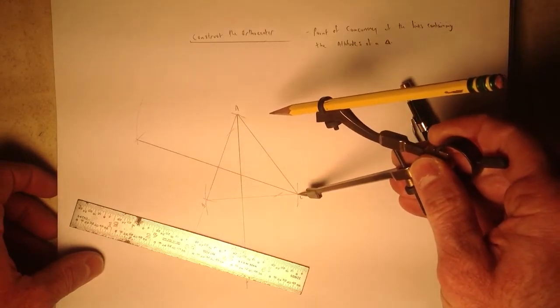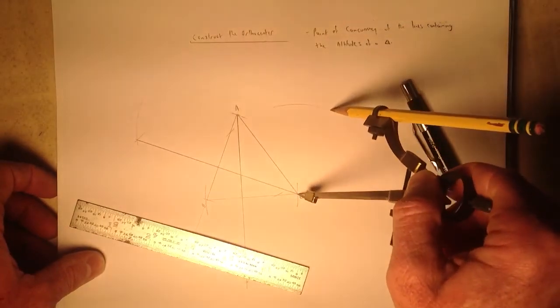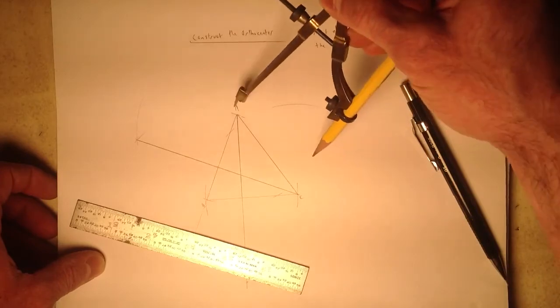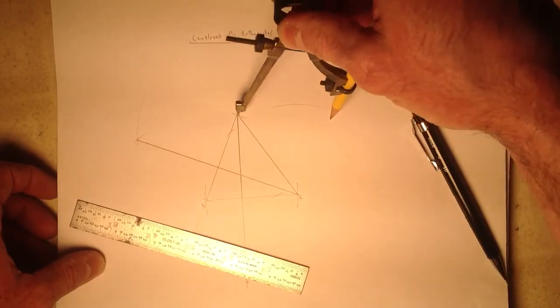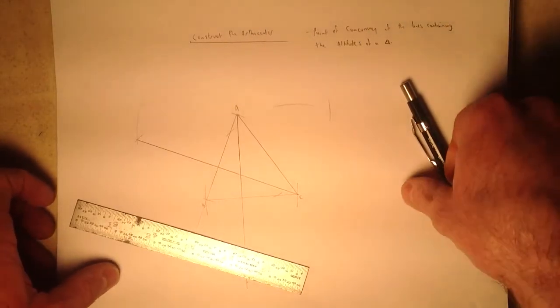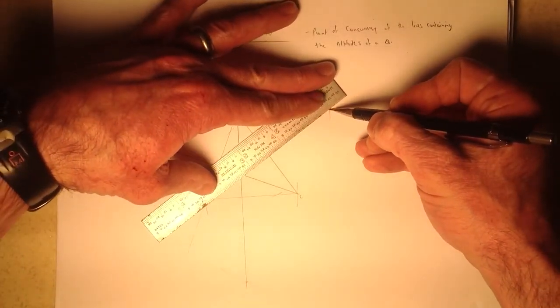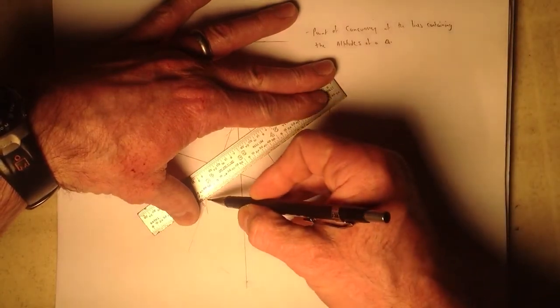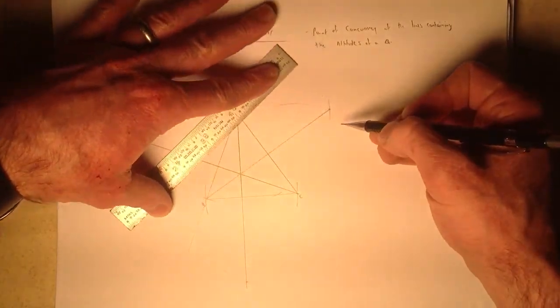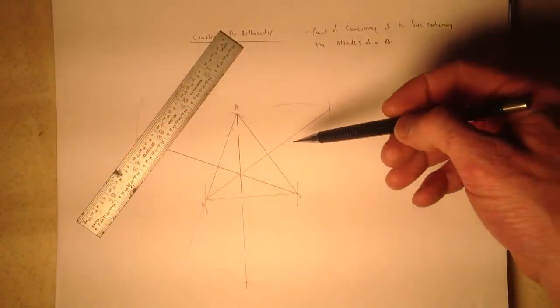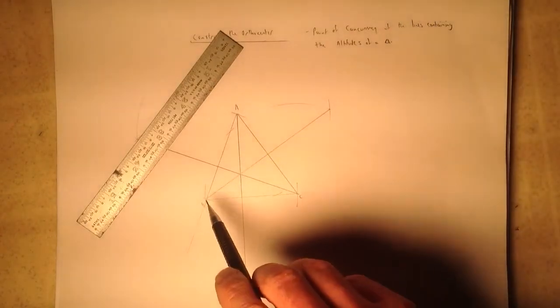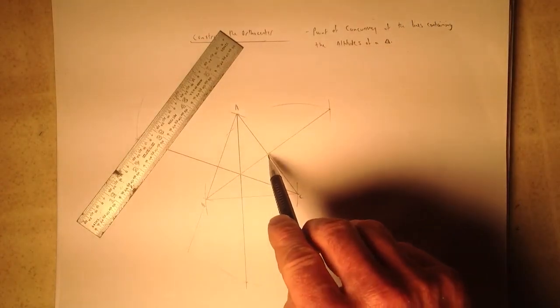I now put the needle of my compass at the first intersection and draw an arc. Switch it to the second intersection and draw an arc. I then connect those two arcs, the intersection of those two arcs, to vertex B, and there we have the line containing altitude to point B. Again, the altitude goes only from B to the opposite side.